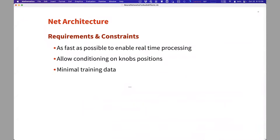So requirements: fast, allow conditioning for the knob positions and minimal training data. There is a data set called signal train that has input output pairs of unprocessed and processed signals. And that's what the paper uses.